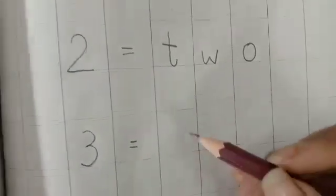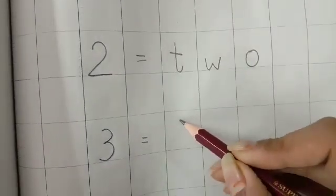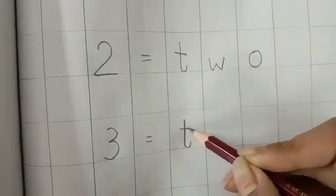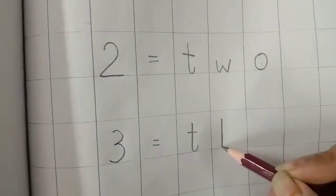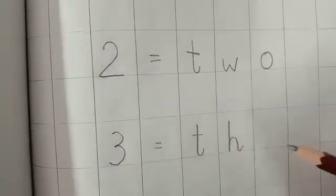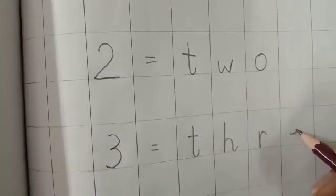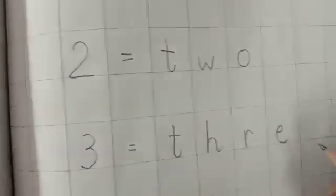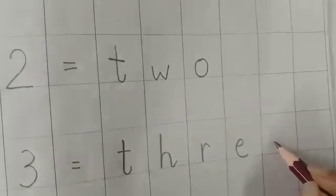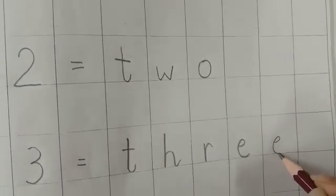Then you will again leave this line and you will write 3 is equals to T-H-R-double-E-3.